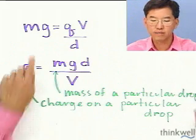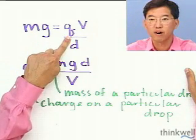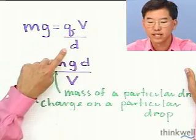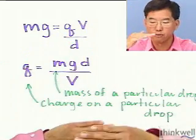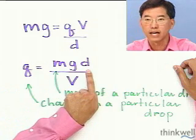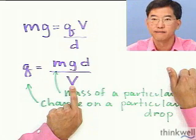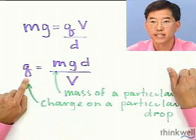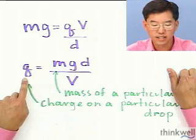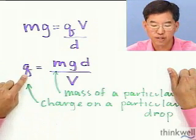We have M times G — the mass of an oil droplet times the gravitational constant — which is equal to the charge on that drop times the voltage divided by the distance between the plates. So the separation between the plates makes a difference as well. Now we can solve this for Q, the charge on a particular oil drop, and it's equal to the mass of a particular oil drop times the gravitational constant (which we know), times the distance between the plates (which we know), divided by the voltage (which we know — remember, we can adjust this and dial it in).